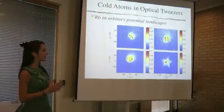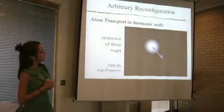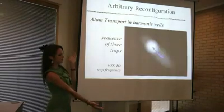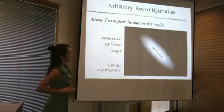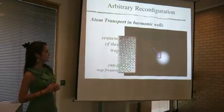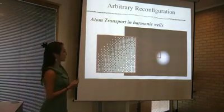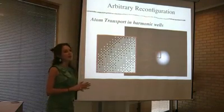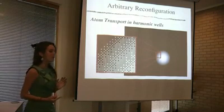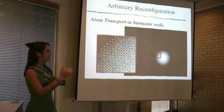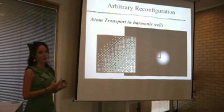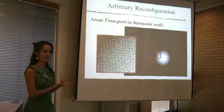Our solution to this is to use a ballistic release and recapture transport. We do this by opening a transport channel between an initial and an end position, and we time the recapture to coincide with half an oscillation period of the atoms in the trap. The demagnification of our optical system means a 4×4 block of mirrors forms a 1 micron diffraction-limited spot, giving us up to 16 different levels of intensity. This allows us to use dither patterns on the DMD to approximate the harmonic potentials needed for the ballistic transport.